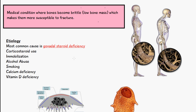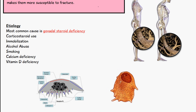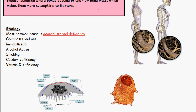Without going into too much detail, the overall idea is that the action of osteoclasts is much greater in comparison to osteoblasts. Osteoclasts are responsible for absorbing bone, while osteoblasts are responsible for the formation of bone. In all of these cases the action of osteoclasts is much greater, so the overall effect is a reduction in bone volume.